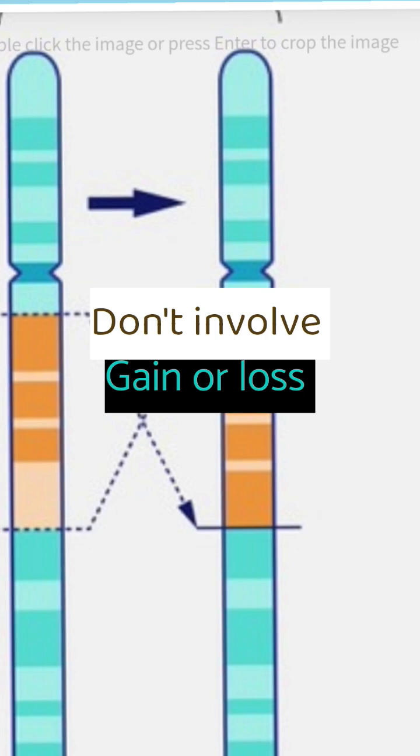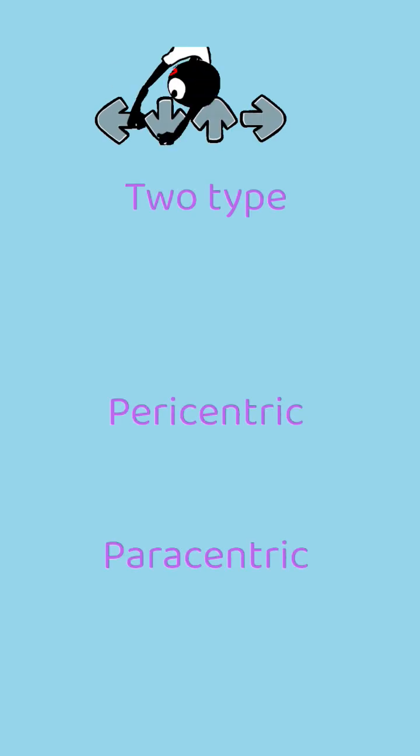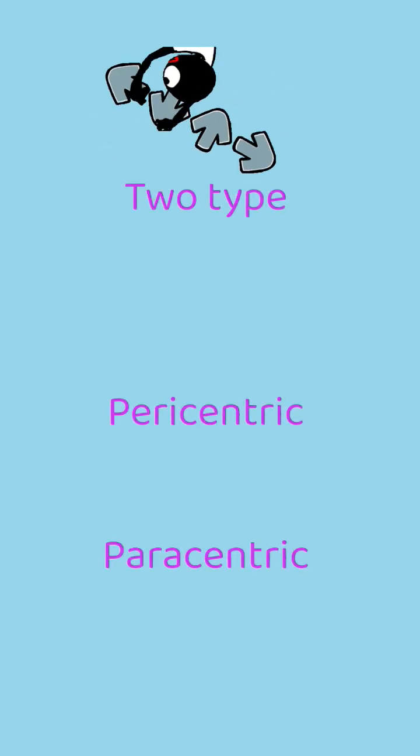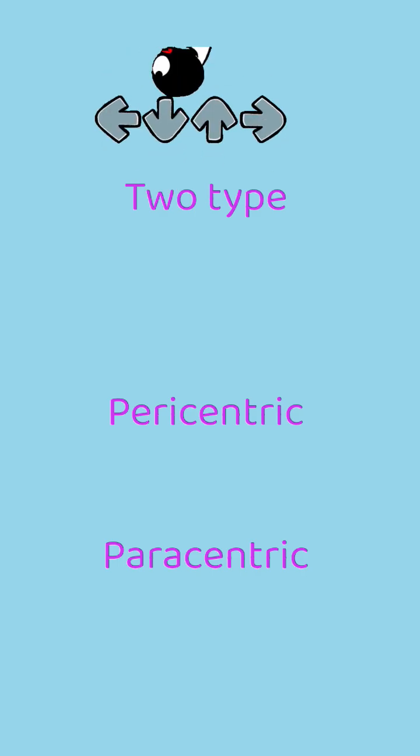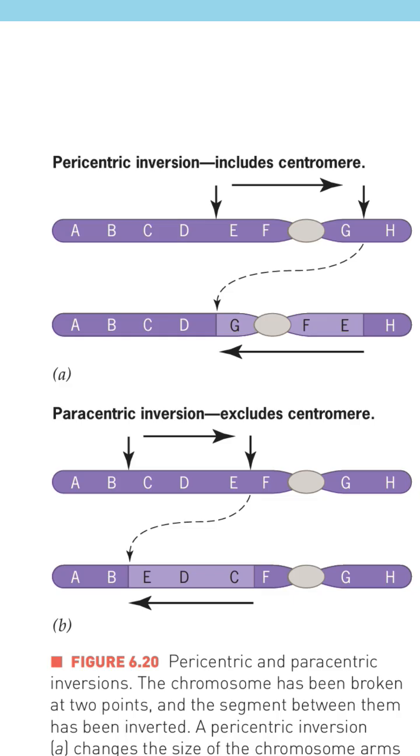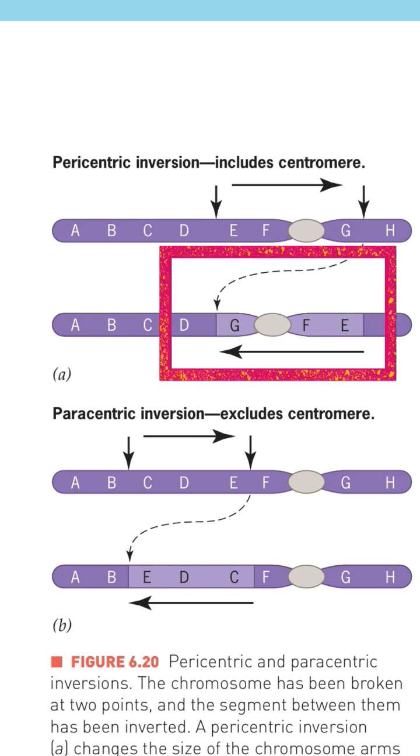Just the position is altered. There are two types of inversion: pericentric, which includes the centromere, and paracentric inversion, which excludes the centromere. In pericentric inversion, the broken segment includes the centromere.